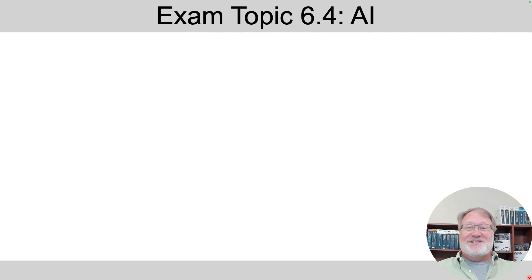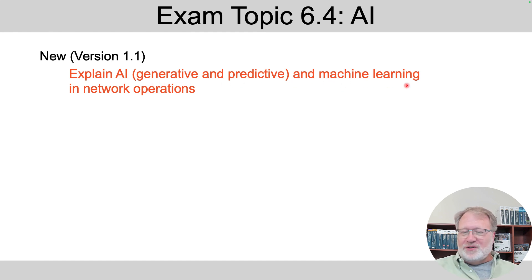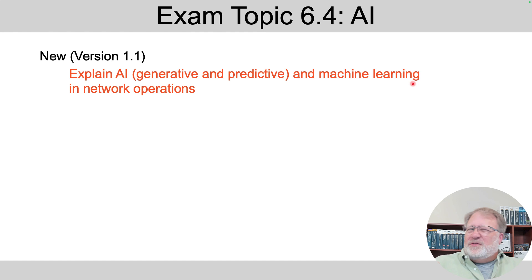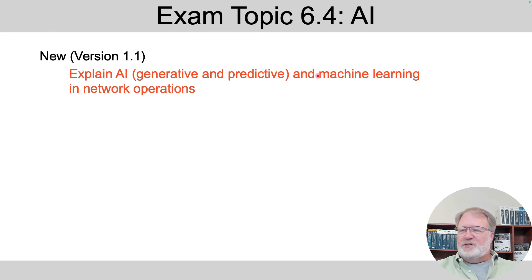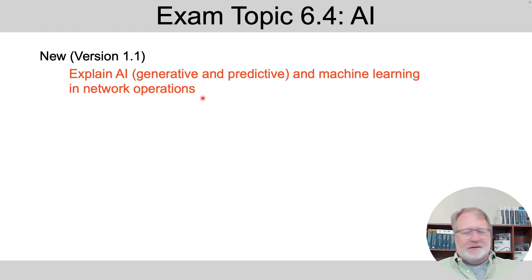Artificial intelligence makes it to Cisco certifications, starting in CCNA. They deleted the old exam topic 6.4 and replaced it with: explain AI — two types — and machine learning and network operations. So you need to define what generative AI and predictive AI are, understand how machine learning is a subset of AI, know a handful of related terms, and think about how AI could be applied in the Cisco world in network operations.